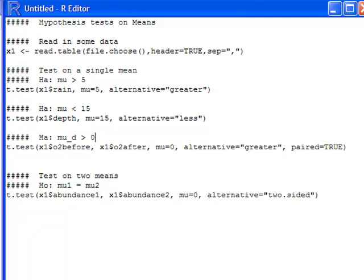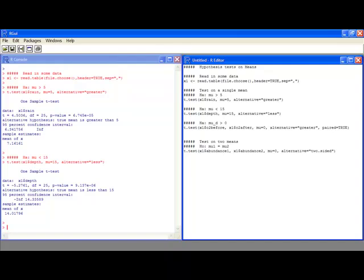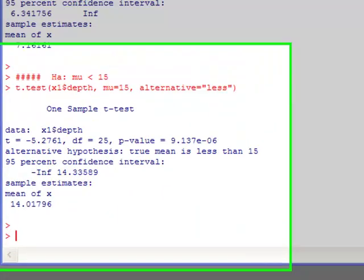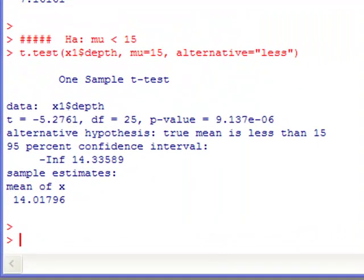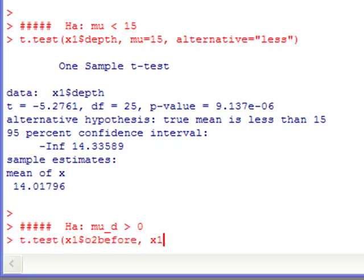So there, now I fixed that. I've gone from an alternative of two-sided to an alternative of greater than and interested in greater than zero. The reason I purposely did that is to get you to pay attention to what the default is in R. So if I were to do this, this is a paired test, meaning that the before and after measurements are on the same object. So in a before and after test, the observations are paired. That's why it says paired equals true at the end of my statement.